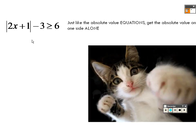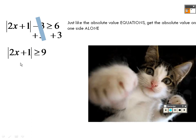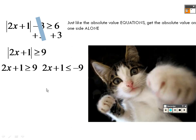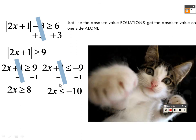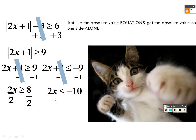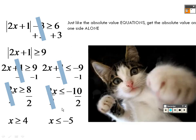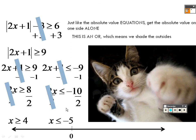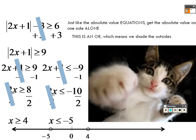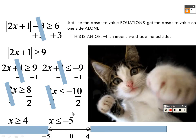To solve this one, get the absolute value alone by adding 3 to both sides, giving the absolute value of (2x plus 1) is greater than or equal to 9. Write down exactly what you got and then write it again with the sign flipped and made negative. Minus 1 on both sides gives 2x is greater than or equal to 8 and 2x is less than or equal to negative 10. Dividing both sides by 2 gives x is greater than or equal to 4 and x is less than or equal to negative 5. This is an OR problem because of the greater than. Both should be closed holes at 4 and negative 5, going outward in both directions.